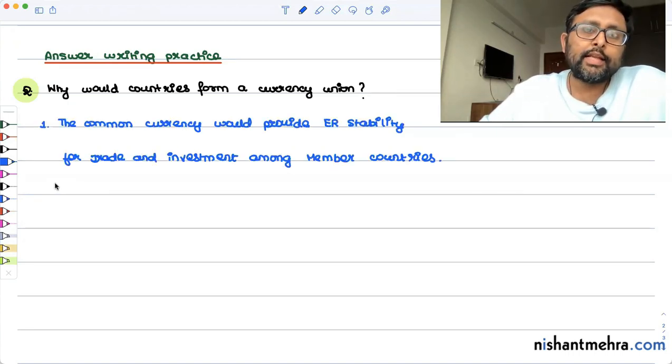The second reason is that if the countries are going to form a currency union, it is going to be very helpful for them in lowering the transaction costs. For example, there are people who are trading in goods and services in the currency union, let's say Euro, right in Eurozone.